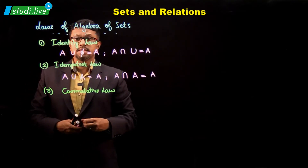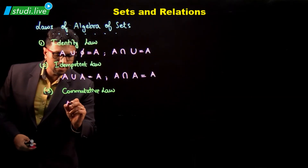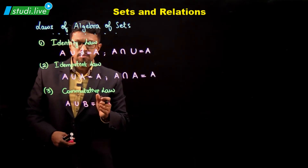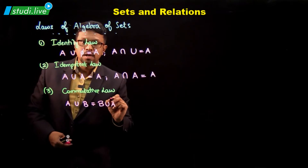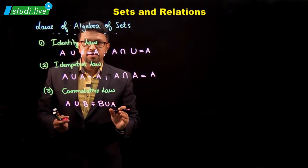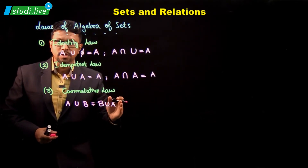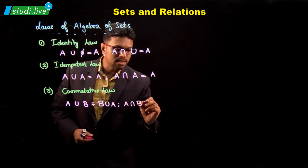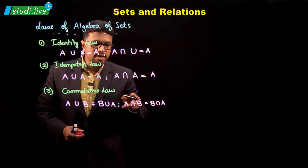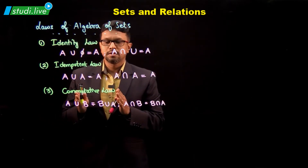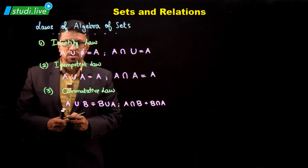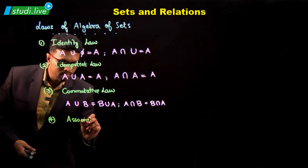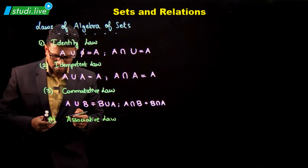Next we have the commutative law. In the commutative law, we can commute the values — the sets can be interchanged in their positions. So A union B can be written as B union A, and it will be the same thing — no difference. Also, A intersection B will be the same as B intersection A. We can interchange the two sets; that is what we have in the commutative law.